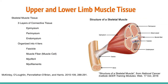Skeletal muscle tissue is the type of muscle tissue that can be found in the body's upper and lower limb muscles. As its name implies, skeletal muscle tissue is muscle that attaches to bones. As a result, skeletal muscle tissue is the most important in body movements.